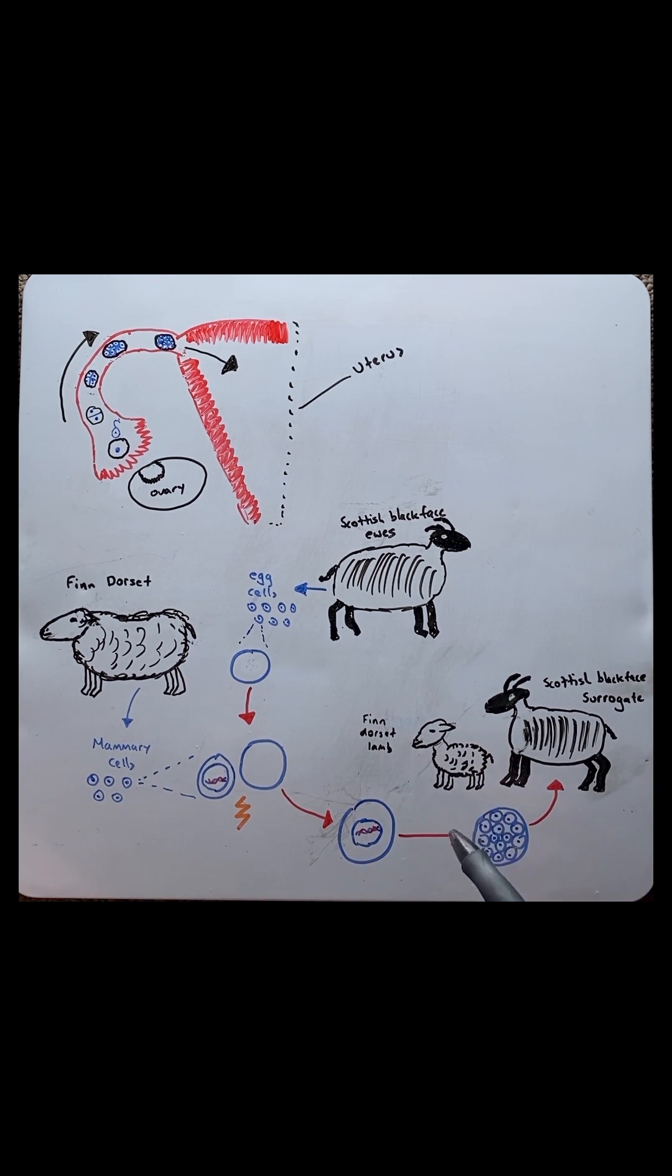148 days later we had a brand new lamb which was identical to this one. So it was a Finn Dorset lamb and we named it Dolly. It was named Dolly after the country western singer, partly because they extracted the cells from the mammary gland. And I'll let you work out the final points to that story.